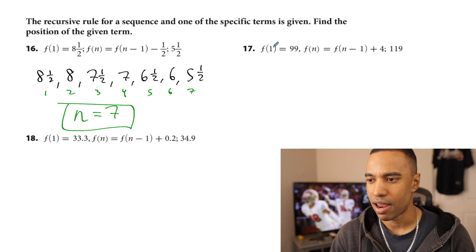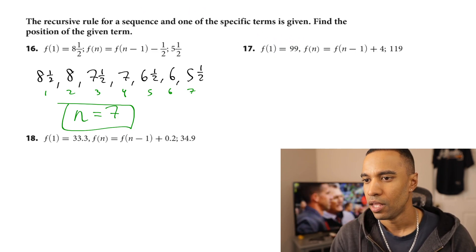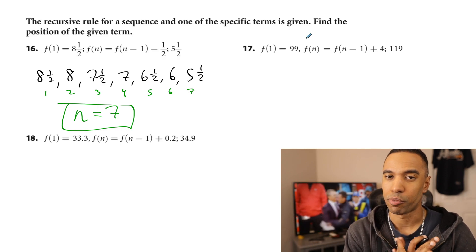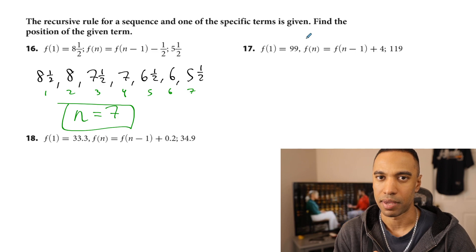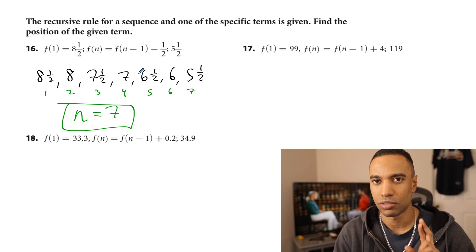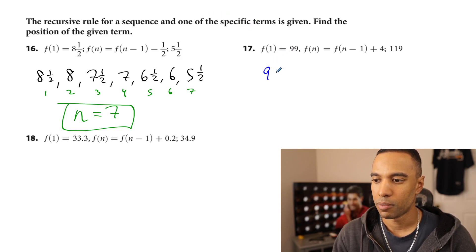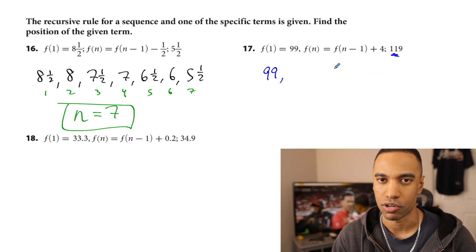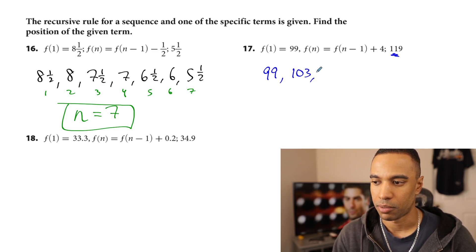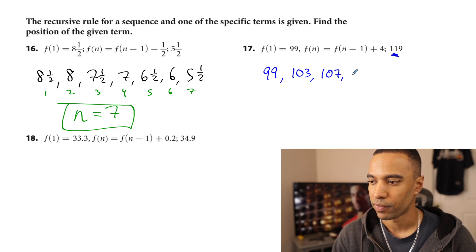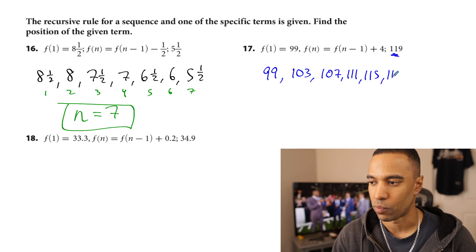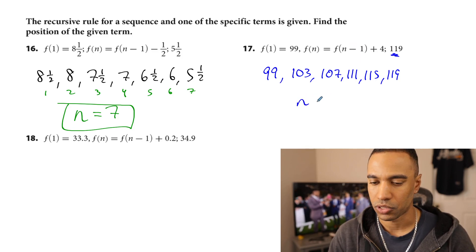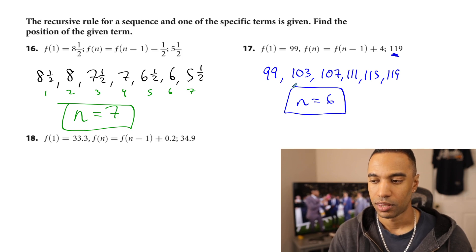Number 17: f of 1 equals 99. The rule says add 4 each time. We keep going until we land on 119. First term is 99; add 4: second term is 103; third is 107; fourth is 111; fifth is 115; sixth is 119. So n equals 6 — the sixth term has a value of 119. By the way, there's more than one way to get these answers, but this iterative process practices recursion along the way.